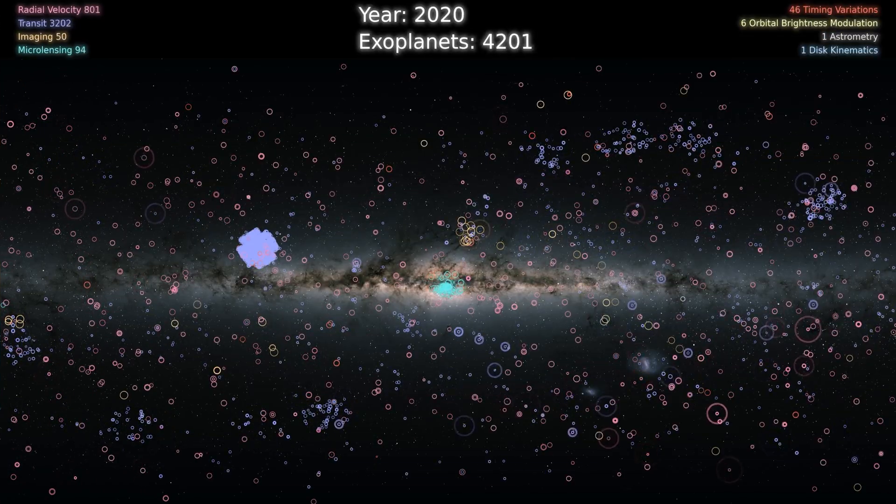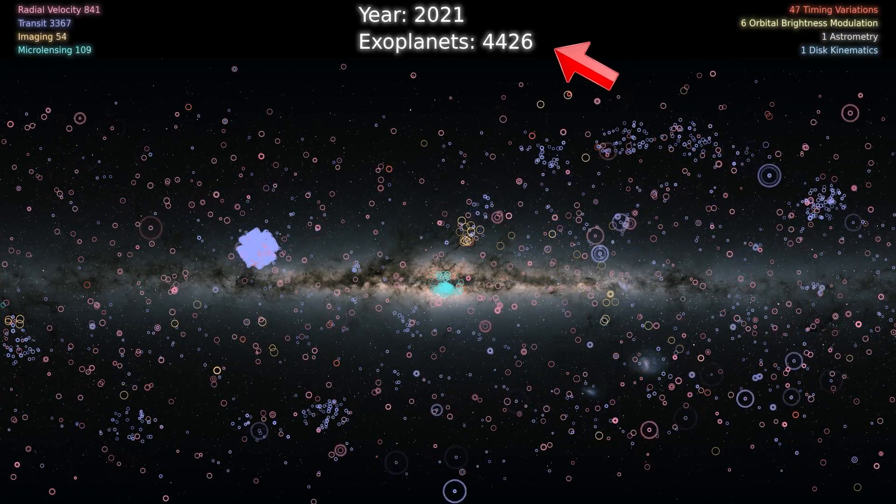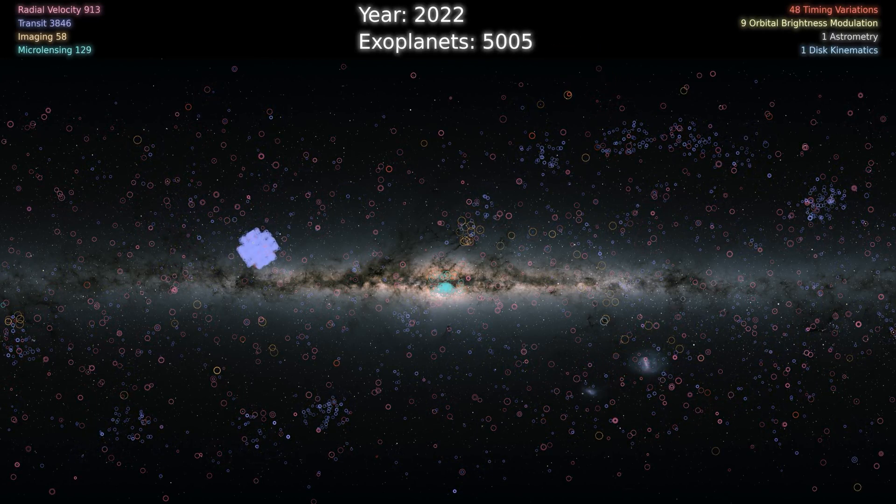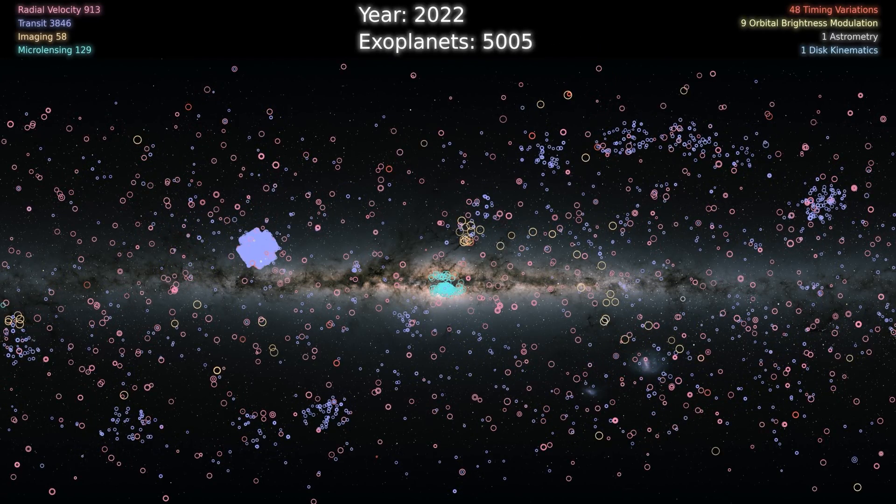Yeah, exactly. Exoplanets are planets outside of our solar system. We now know of over 5,000 today, and we now think that due to ground and space telescopes, there are as many planets in the sky as there are stars. So planets are everywhere.